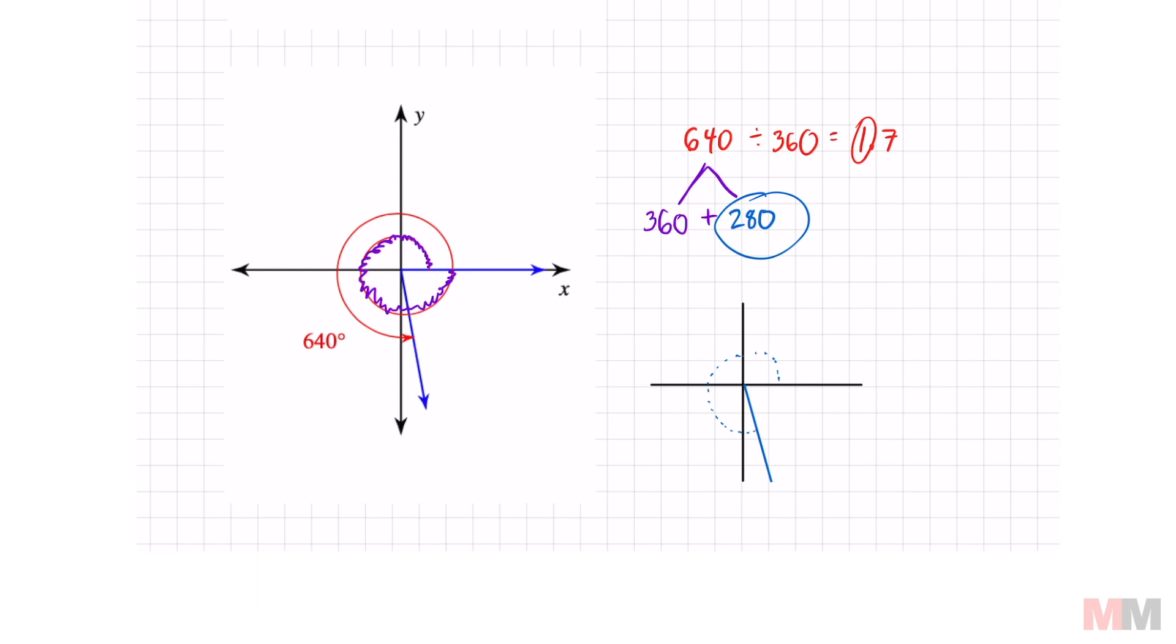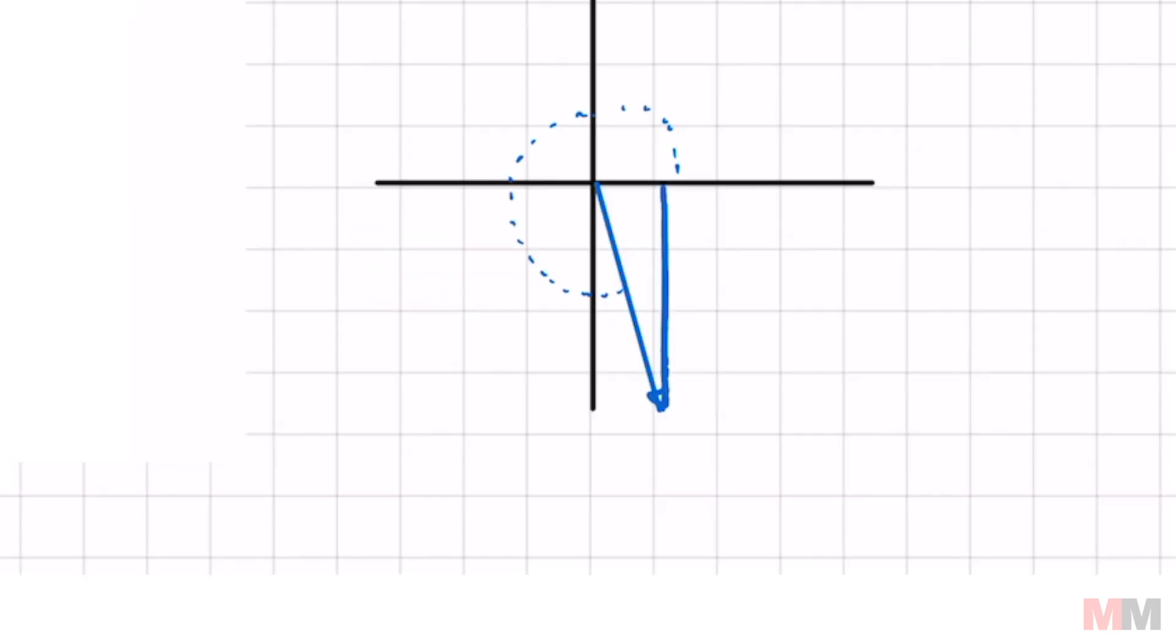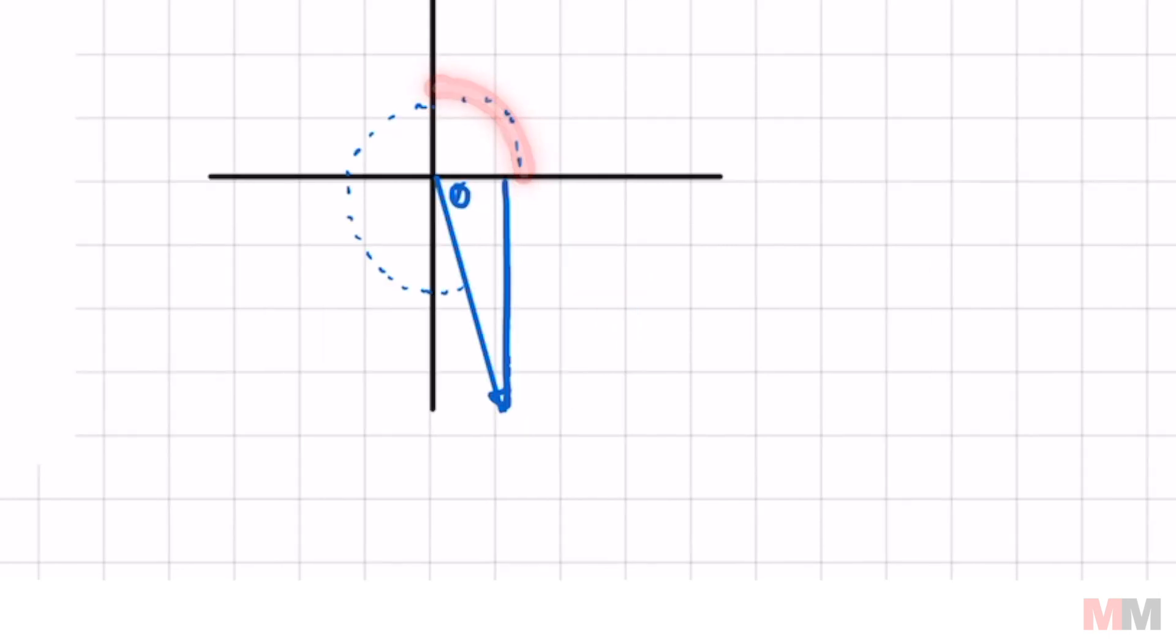All the way to up there. My reference angle is the tip of my terminal all the way to the x-axis right here. So I'm trying to find that opening. From the beginning all the way to this y-axis, that is already 90, right?